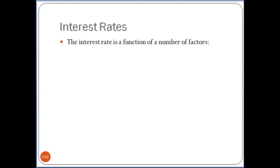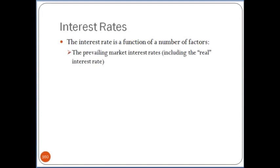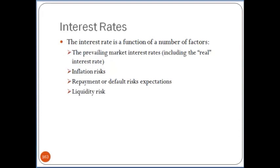We can think of an economy-wide interest rate — the cost of borrowing money — as a function of a number of different factors: the prevailing market interest rates, something known as the real interest rate, inflation risk or the inflation risk premium, repayment or default risks, and liquidity risks — meaning, are we going to be able to convert our bond into cash if we need it, is there an active market? There are other risk factors in bonds as well; a common one is reinvestment risk.